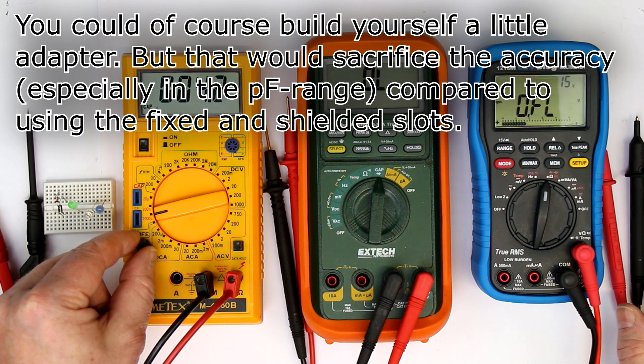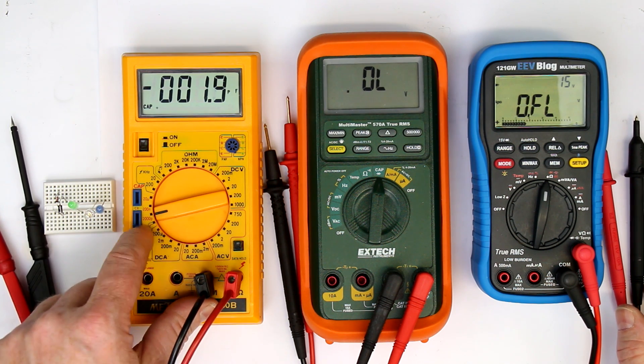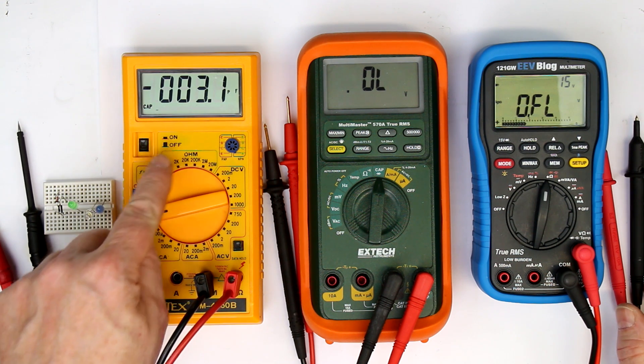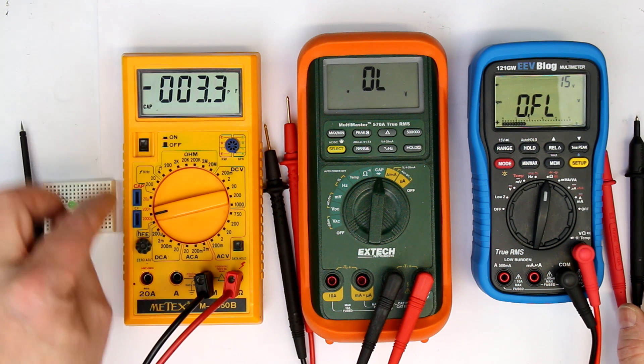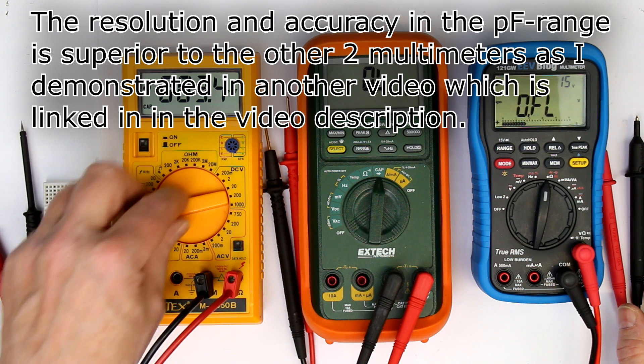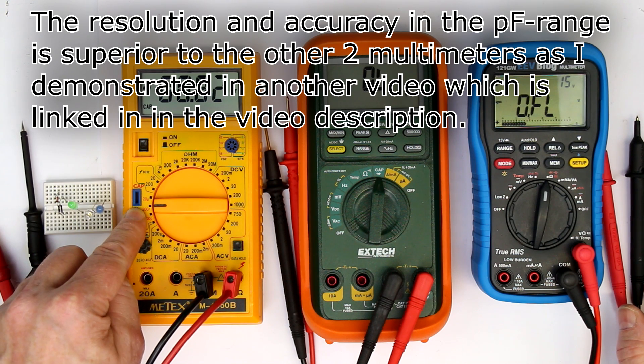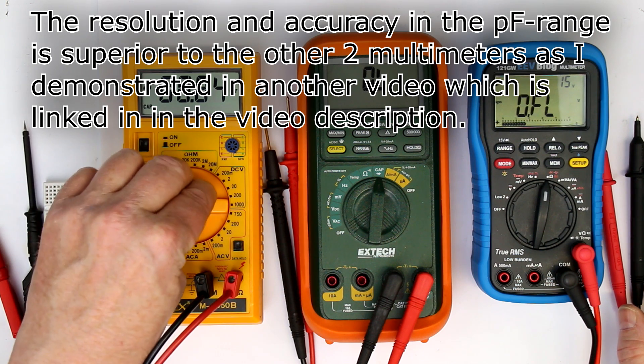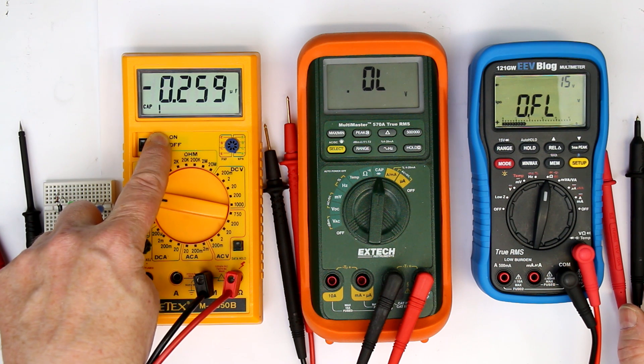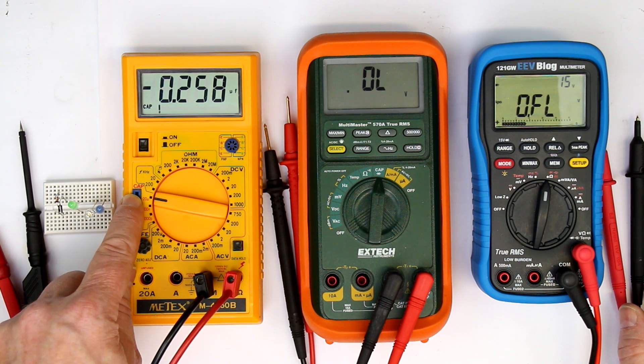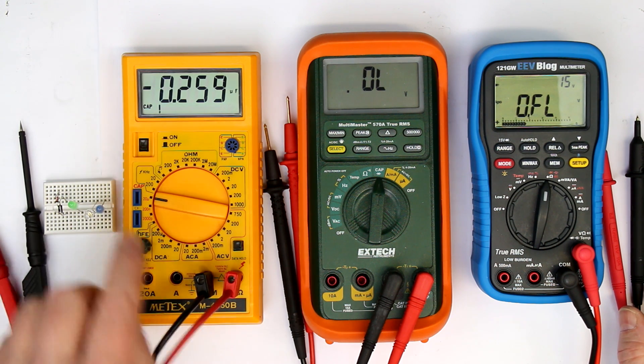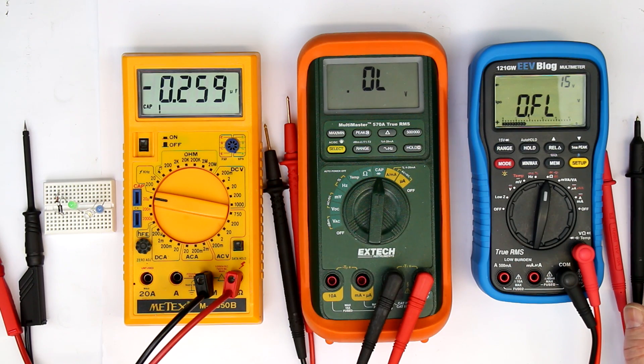But the resolution is 0.1 picofarad. And that is quite nice. It has three ranges. The first is up to 2 nanofarads with a resolution of 0.1 picofarads. Then it goes in steps of 100 to 200 nanofarad with a resolution of 10 picofarad. And then again, of a step of 100 up to 20 microfarads. That was well enough for the time because higher capacity capacitors you can easily measure with other methods. Let's compare this to the two newer ones.